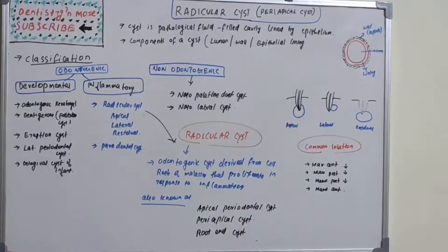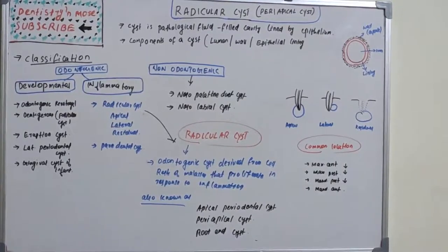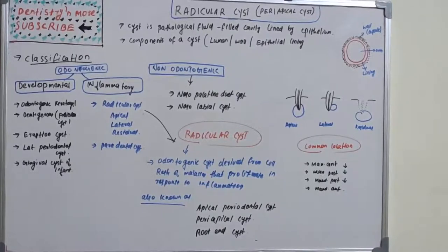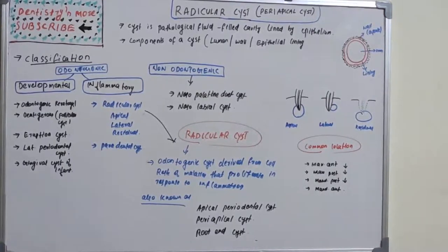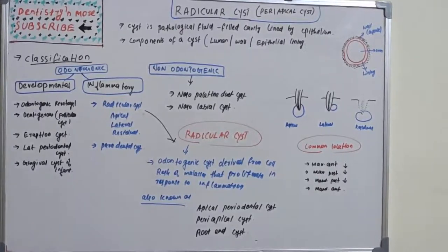Hello everyone, welcome back to another session on dentistry and more — oral pathology. So far we finished important syndromes and important tumors. Now we are moving on to important cysts: radicular cyst, odontogenic keratocyst, and dentigerous cyst. These three are the most important ones for university exams, so let's get into the details.